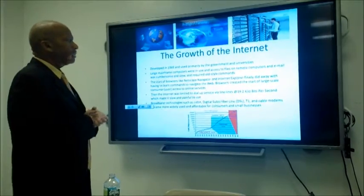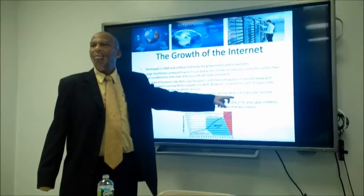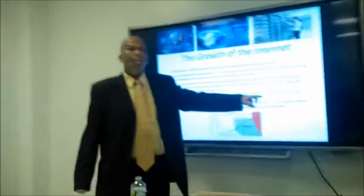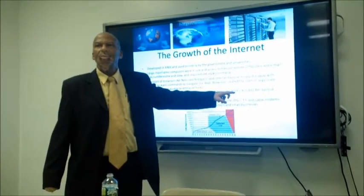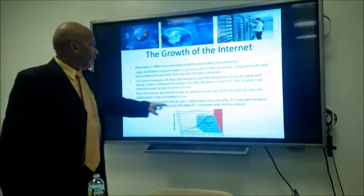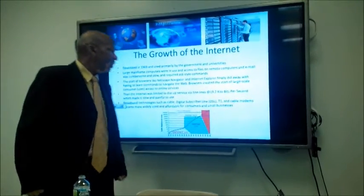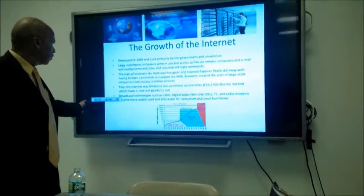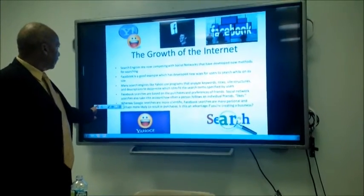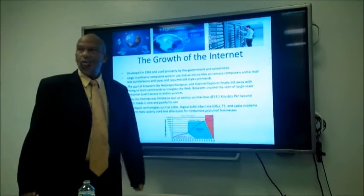The internet was initially limited to dial-up servers via phone lines — look how slow it was: 19.2 kilobits per second. Now we're looking at gigabits per second. You would sit there and wait and wait for a file to download, which made it slow and painful. Broadband technologies such as cable, Digital Subscriber Line (DSL), T1, and cable modems became more widely used and affordable for consumers and small businesses.